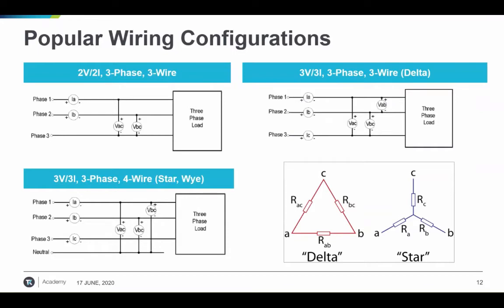There is a 2V2I configuration — whenever we say 2V2I or 3V3I, that means you're using two voltage probes and two current probes, or three voltage and three current probes, to make the connection for measurement. A 2V2I configuration utilizes two voltage and two current probes to make three-phase measurements, also called the two-watt meter method. It uses two voltage measurements referenced to the same phase or line and the two currents flowing into that phase. The assumption is that the three-phase system is balanced — the summation of all voltages at neutral is zero volts and the summation of all currents is zero amps, true if there is no leakage current from neutral to ground.